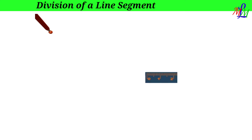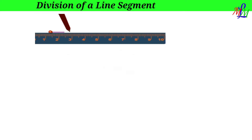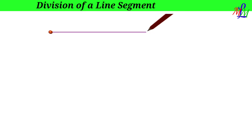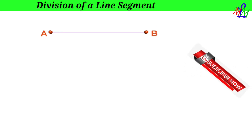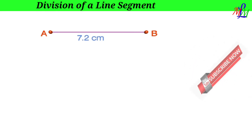First, we have to draw a line segment of length 7.2 centimeters. Draw up to 7.2 centimeters and identify the end points of the line segment — name them as capital A and capital B. So this is the line segment AB, and the length of AB is 7.2 centimeters.